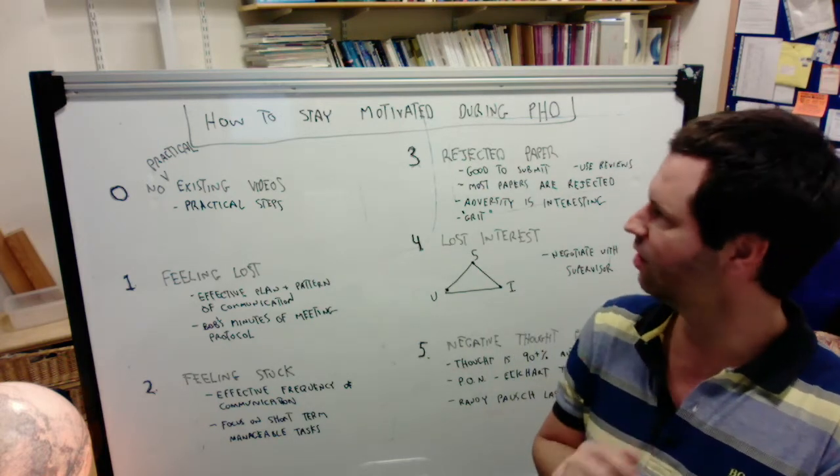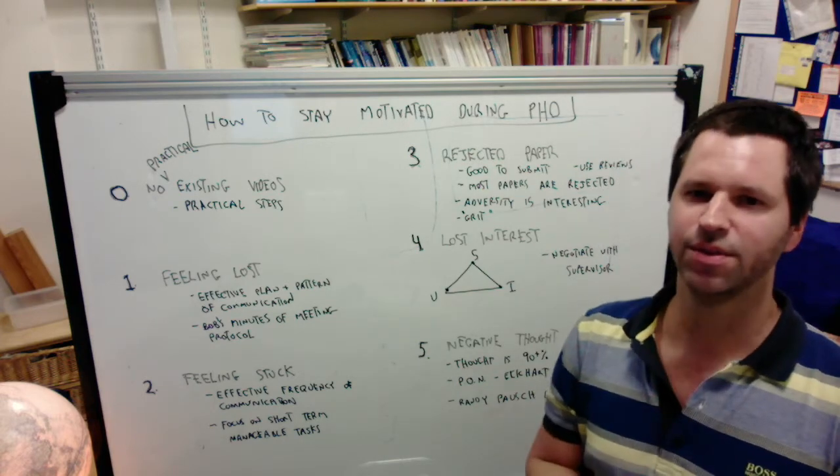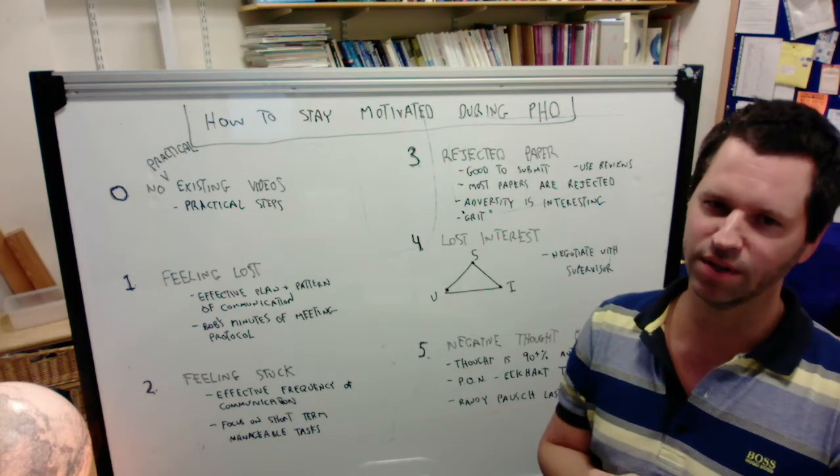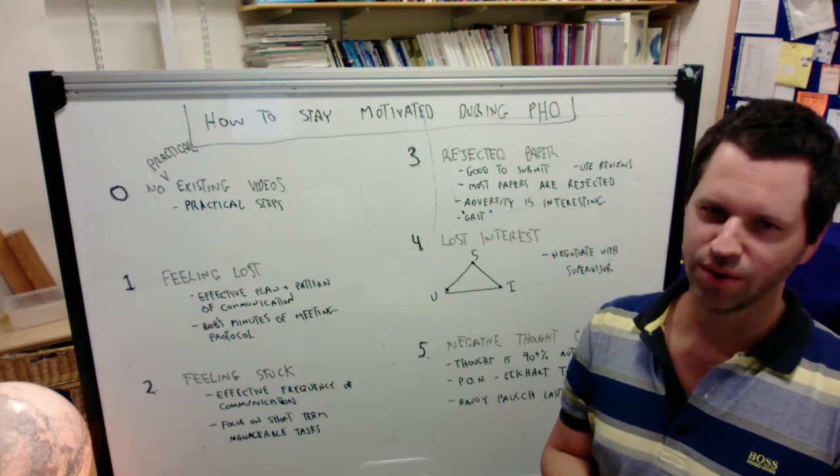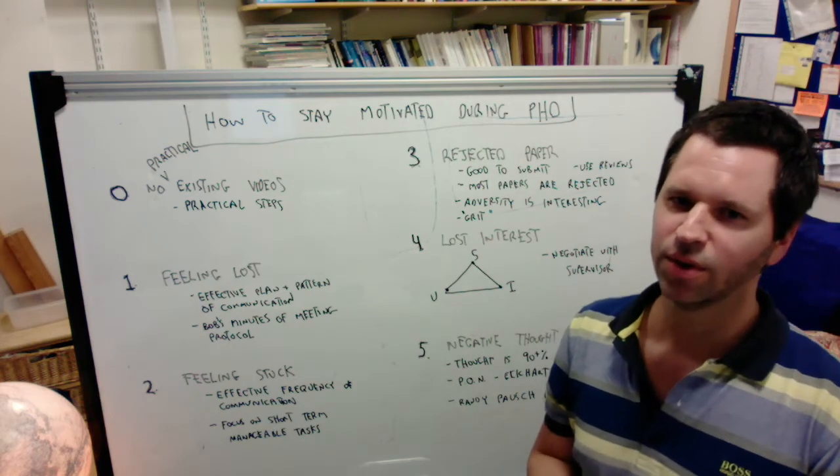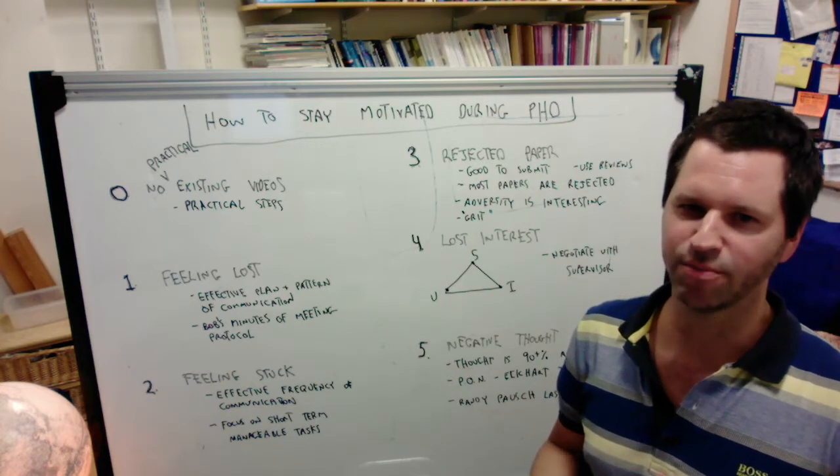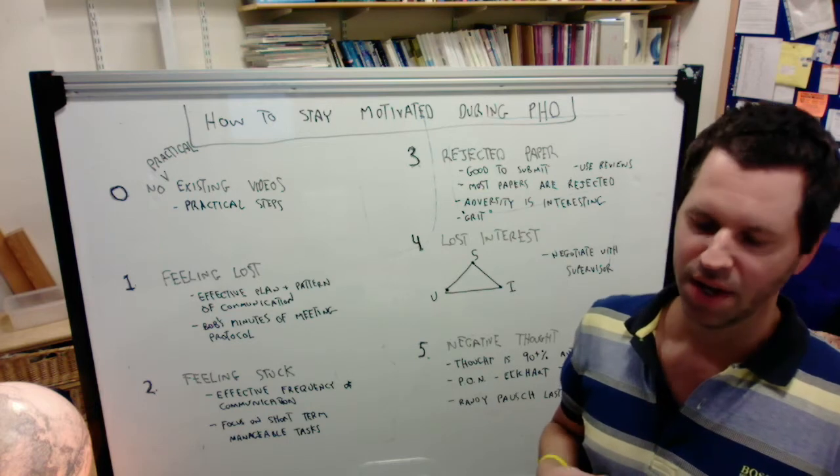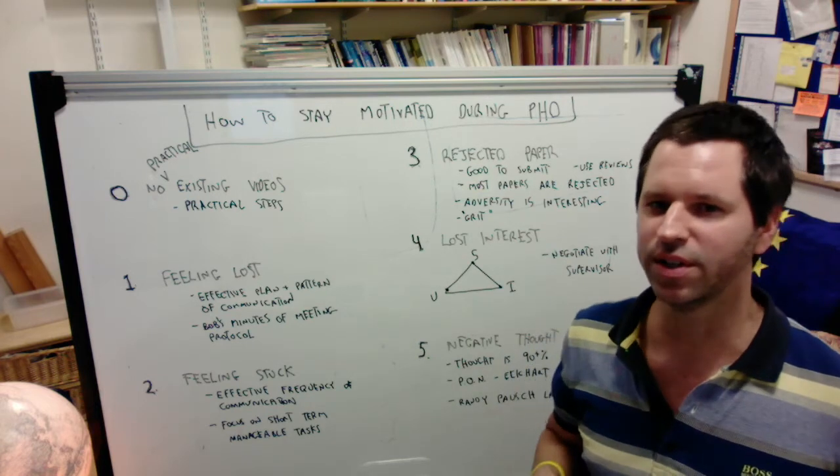Another thing to remember is most papers do get rejected. Most papers that get submitted get rejected. In computer science, it can be very brutal. Many conferences have things like 10% acceptance rate or 20% acceptance rate. That is really competitive and really tough.